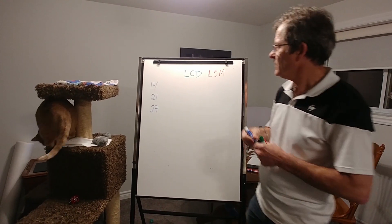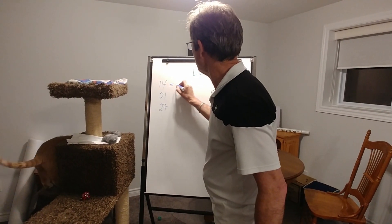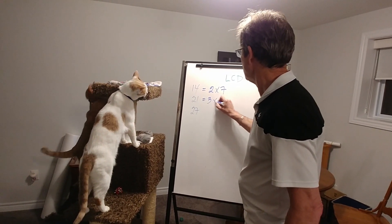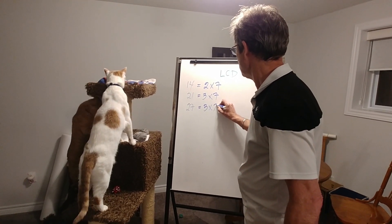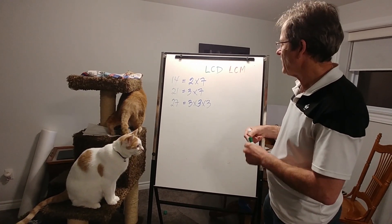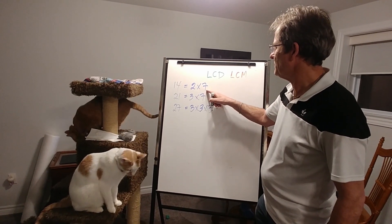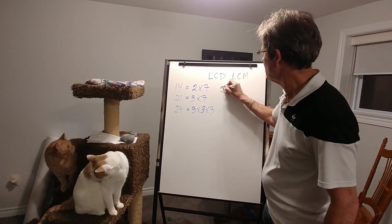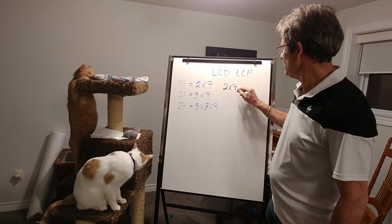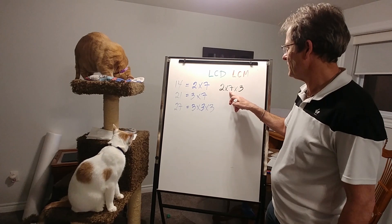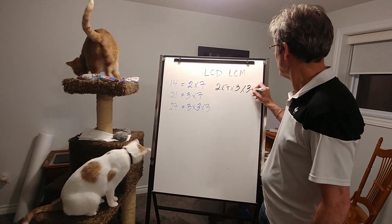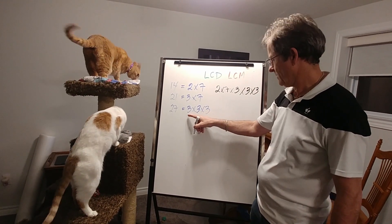So what's an easy way to do that? Well, let's break down these numbers into their smallest prime factors. 14 is 2 times 7. 21 is 3 times 7. 27 is 3 times 3 times 3. To get the lowest common denominator, I know I have to have at least a 2 and a 7 in it because 14 has to go into it — so that's 2 times 7. I know I have to have a 3 and a 7 in it because 21 goes into it. There's the 3, but I don't need another 7 — I've already got one. And then I have to have three 3s, but I only need two more because I've already got this one right here.